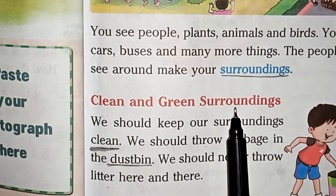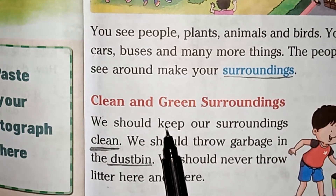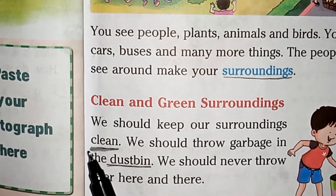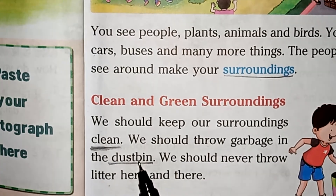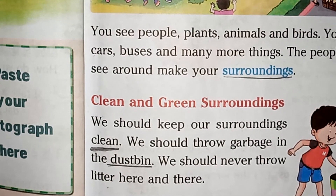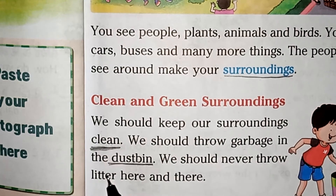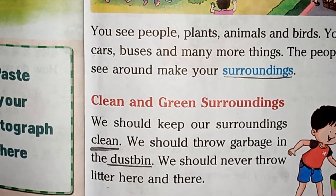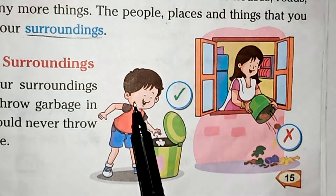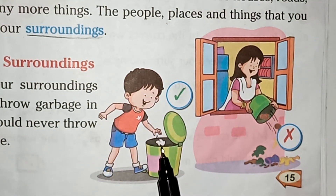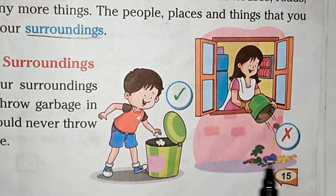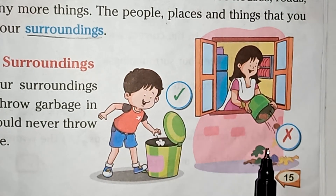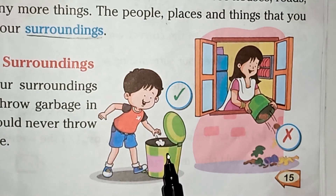Clean and green surroundings. We should keep our surroundings clean. We should throw garbage in the dustbin. We should never throw litter here and there — litter means garbage. Look at this picture: this boy is throwing garbage in the dustbin — this is a good thing. This girl spreads litter here and there — this is not a good thing. We should throw litter and garbage in the dustbin.